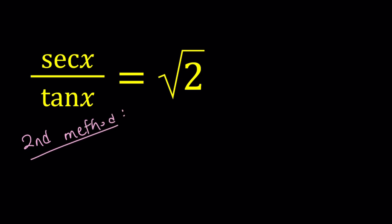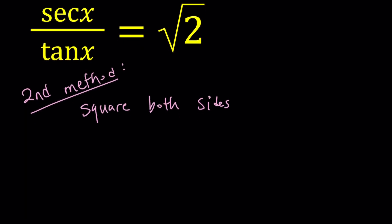So for my second method, I'm going to square both sides. And there's a reason behind it. So if you go ahead and square this, you're going to get 2 here.